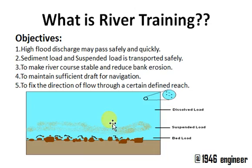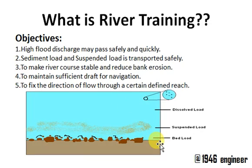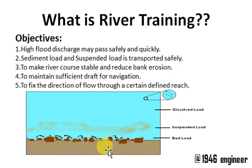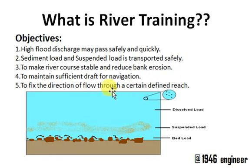Why do we have to guide a river? Because as the river moves, it also carries bed load, suspended load, and dissolved load — all moving with different velocities. When the flow velocity is very high, it erodes the naturally available bed. When the velocity is low, it results in accumulation of bed load and suspended load at certain places.